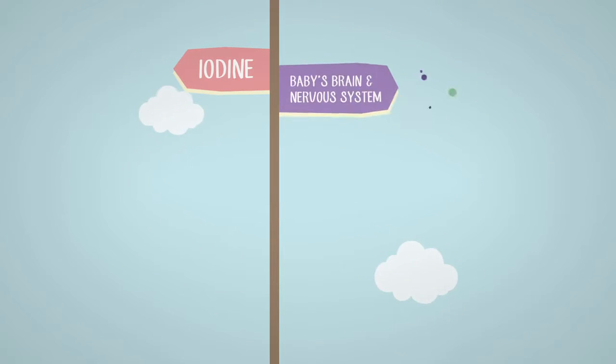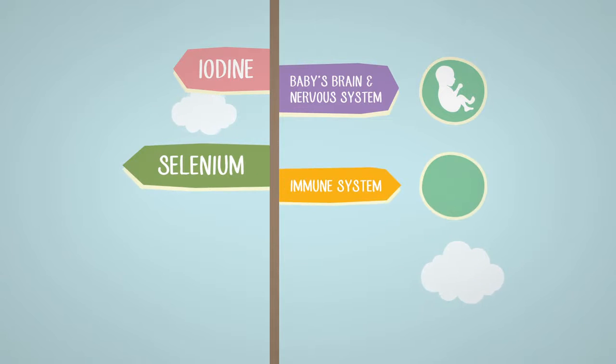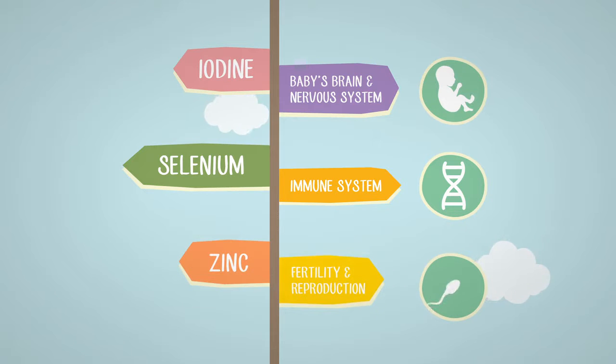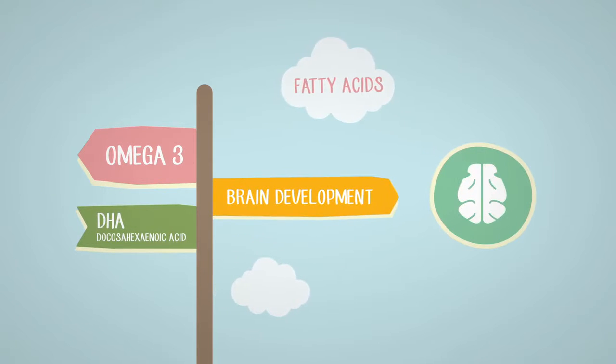Iodine helps your baby's brain and nervous system develop. Selenium is a mineral that plays an important role in our immune system. Zinc contributes to normal fertility and reproduction. Omega 3 fatty acid DHA improves a baby's brain development.